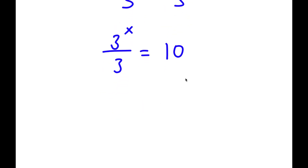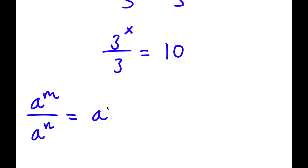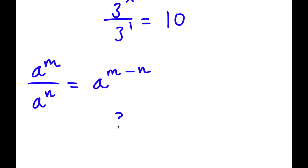Now, if I have something in the form a to the power of m over a to the power of n, this is equal to a to the power of m minus n. So 3 to the power of x over 3 — well, 3 is the same thing as 3 to the power of 1. So I have 3 to the power of x over 3 to the power of 1 is equal to 10, and this simplifies to 3 to the power of x minus 1 is equal to 10.